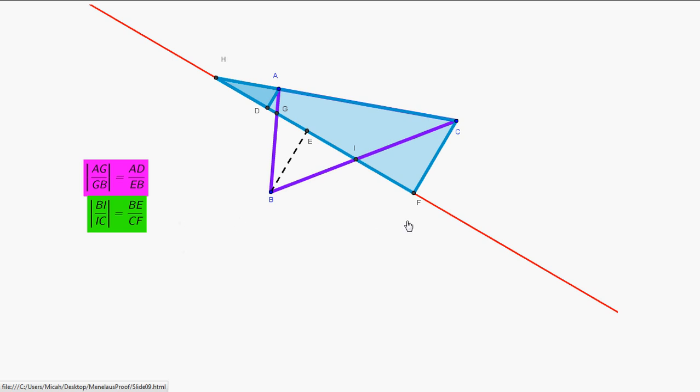Finally, we look at our third set of similar triangles. We have these two right triangles here, AHD and CHF. These are right triangles that literally share this angle here, so they must be similar. And therefore, the ratios of division CH over HA must be equal to, in magnitude, to the ratio CF over AD. And that's what we get here.